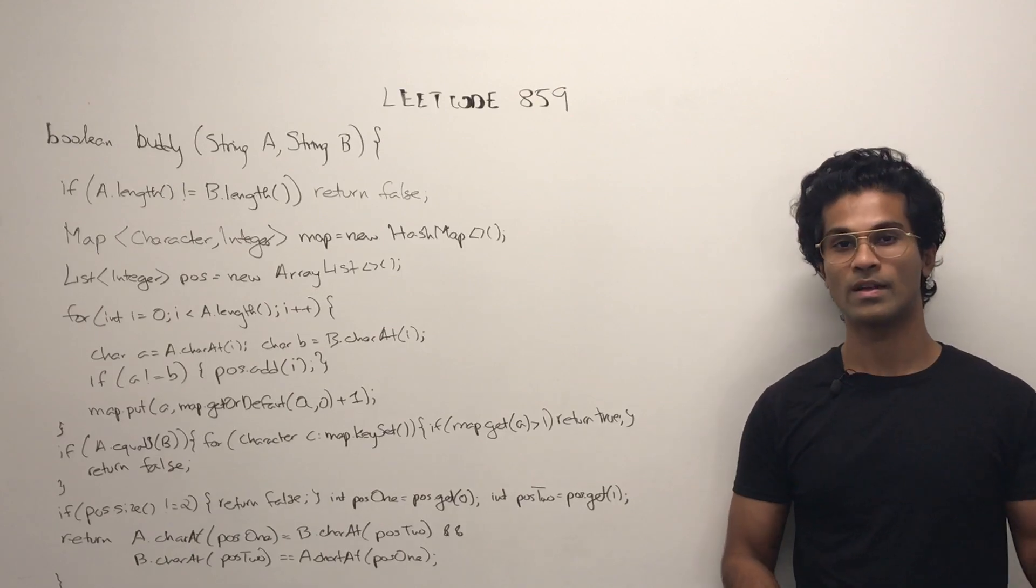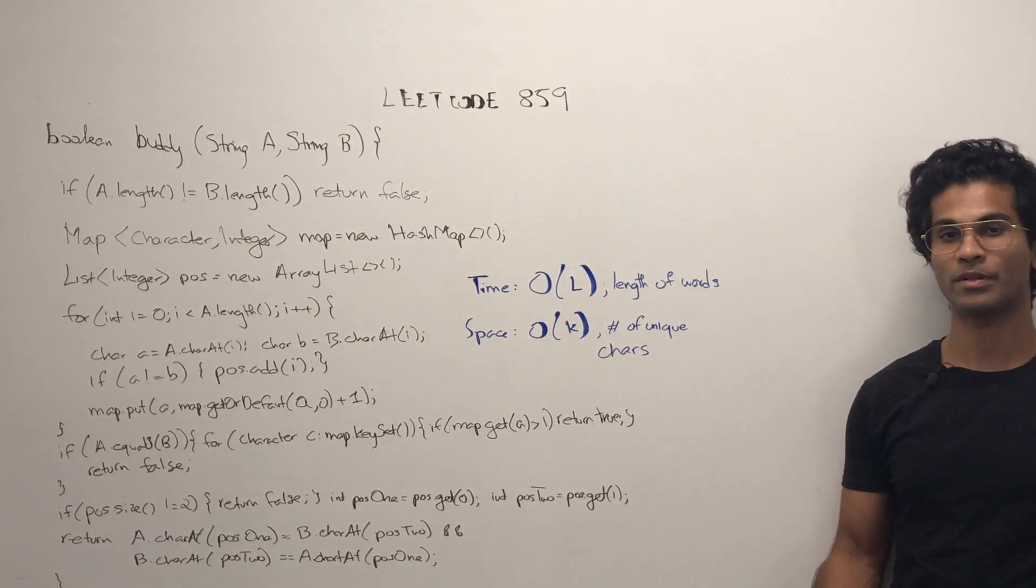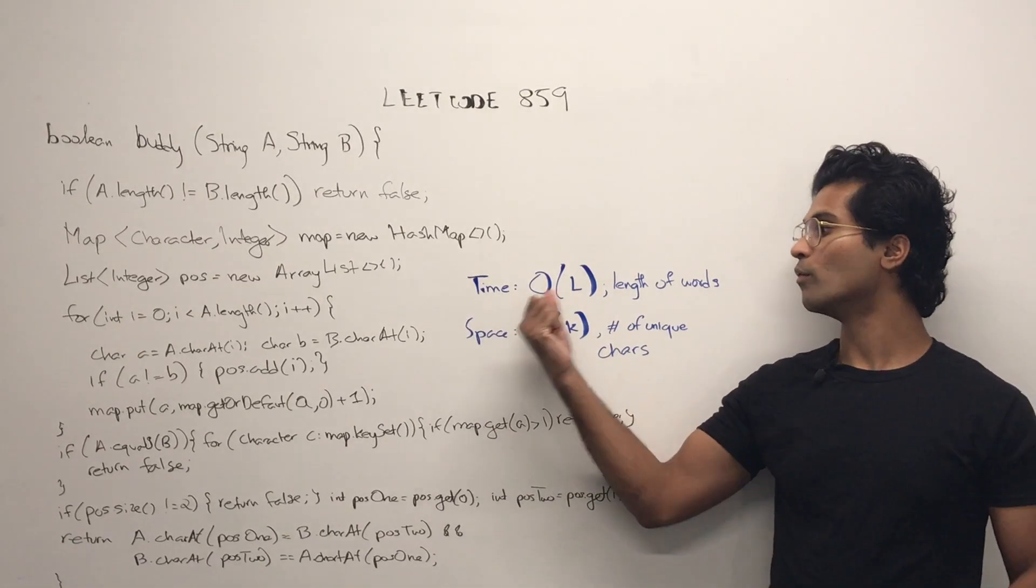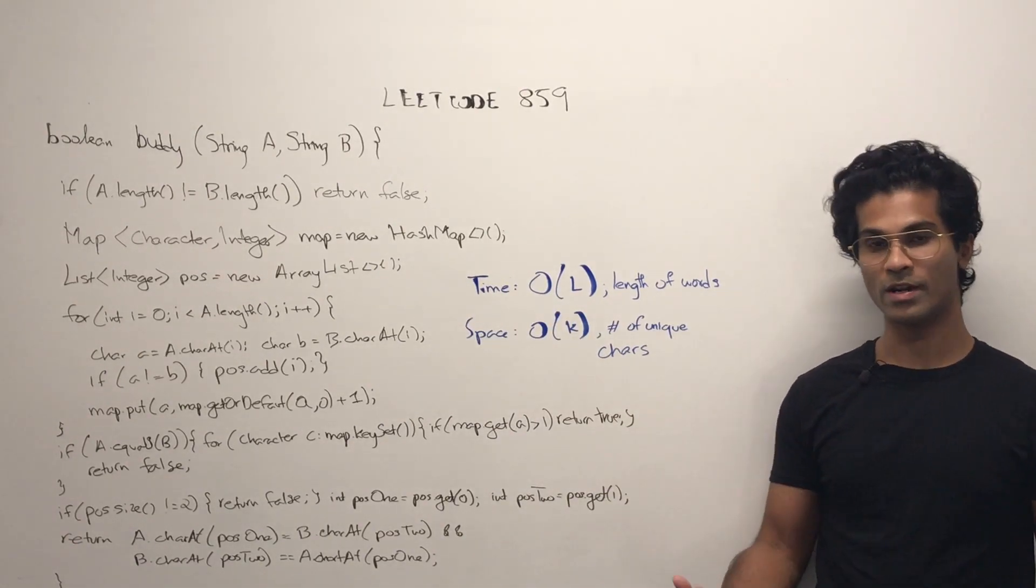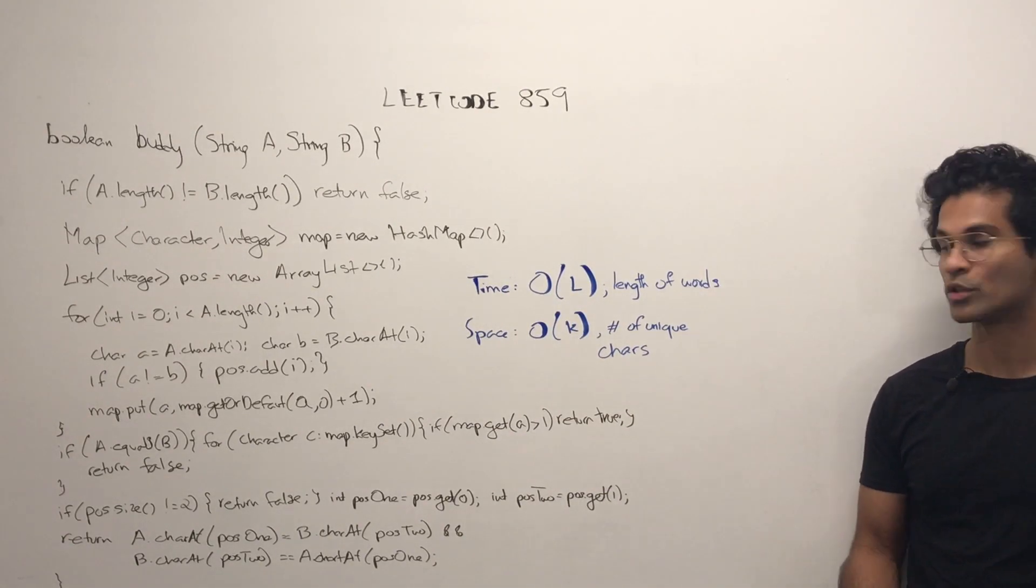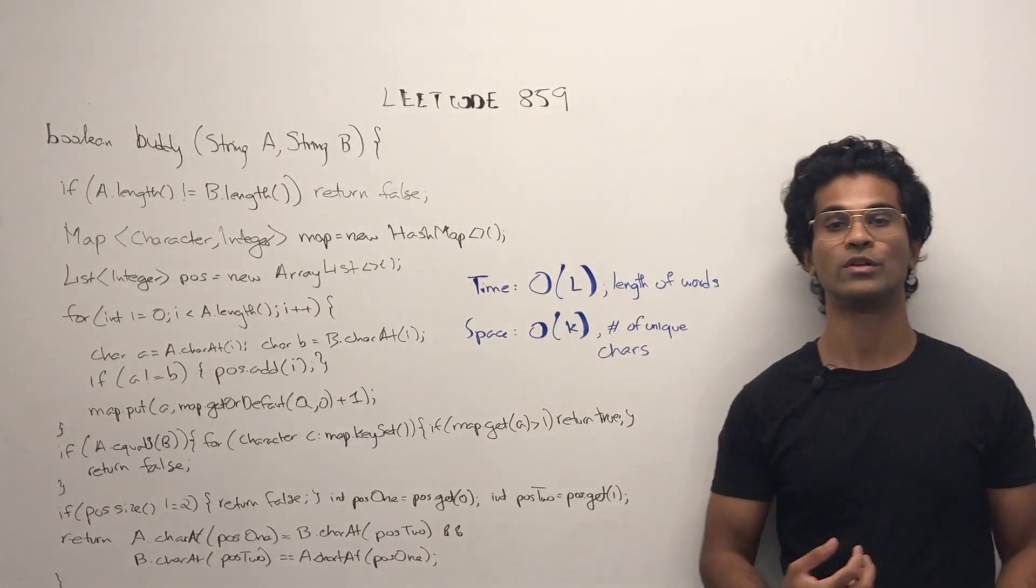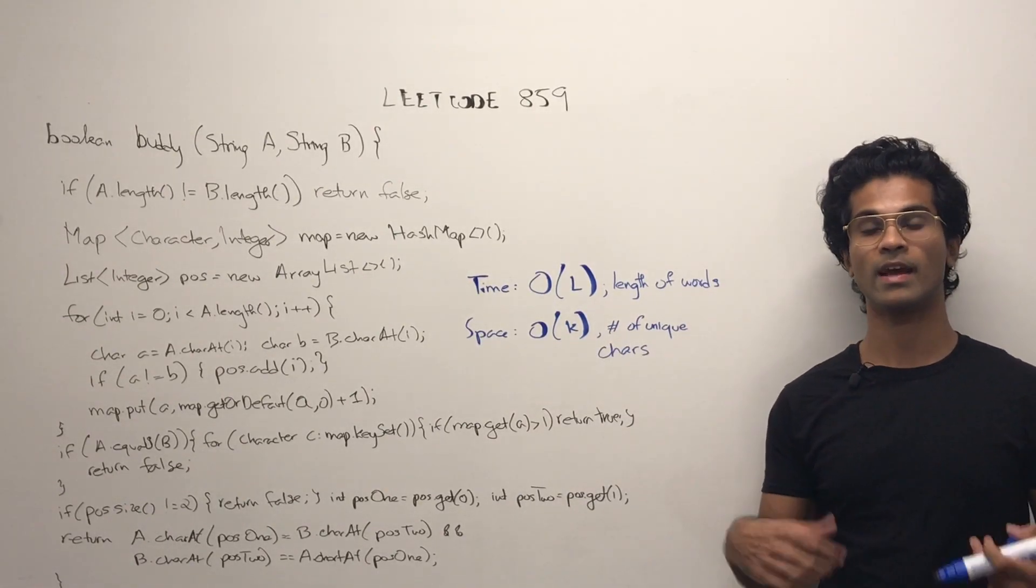You can check the code in the link below. The time and space complexity are going to be as follows. The time is going to be O of L which is the length of the word and the space complexity is going to be O of K which could be the number of unique characters.